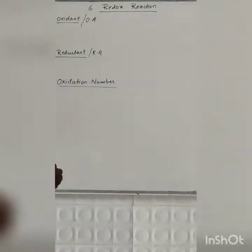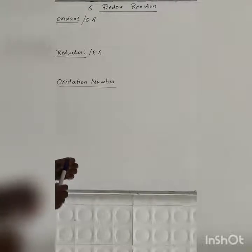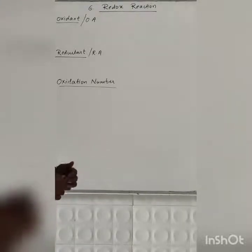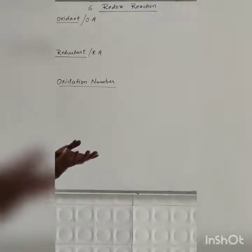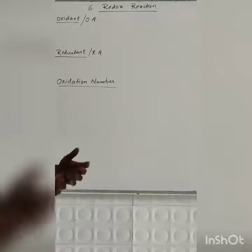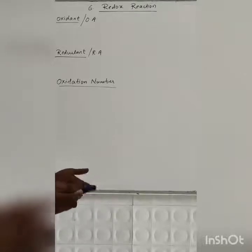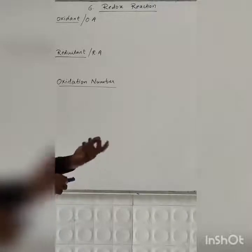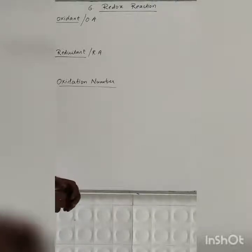So as students, we are going to the chapter that is Redox Reactions. In the last lecture we discussed the basic parts: what is meant by Redox Reactions, what is Oxidation and Reduction. We saw the definitions of both Oxidation and Reduction in terms of electrons, hydrogen, and oxygen, and we saw different reactions as examples.